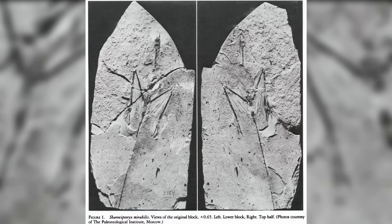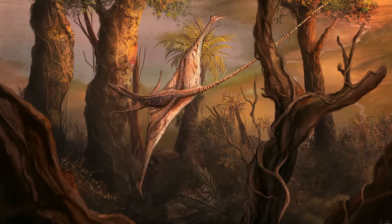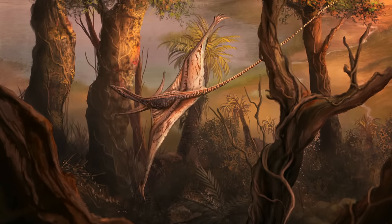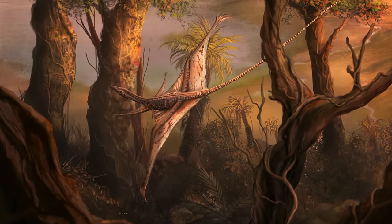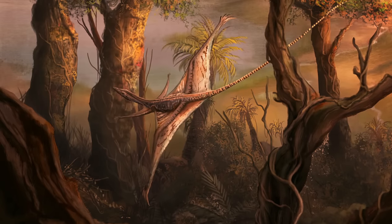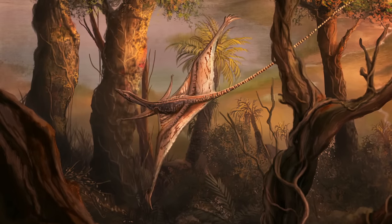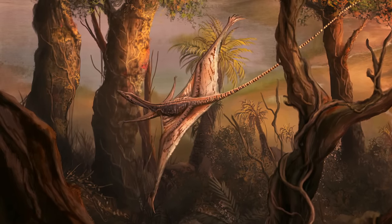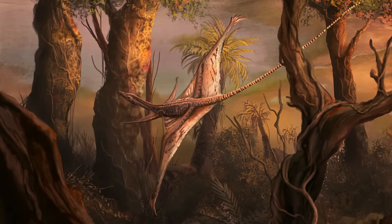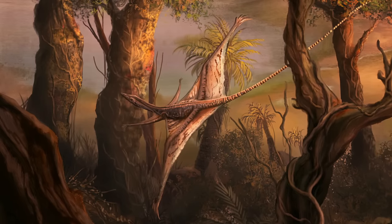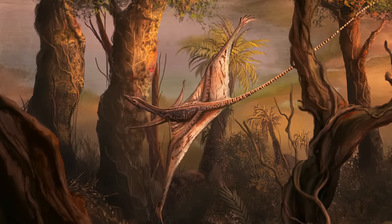Interestingly, Sharovipteryx is classified as a Protorosaur, a group of Triassic creatures that are probably more closely related to archosaurs than anything else. This includes animals like the long-necked Tanystropheus and the reptile-monkeys like Drepanosaurus.